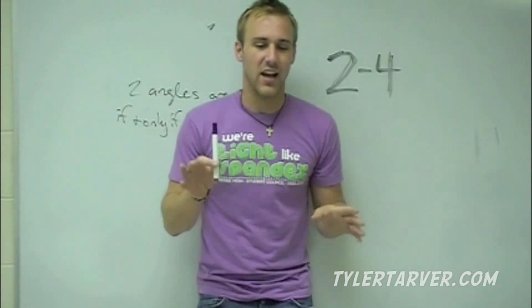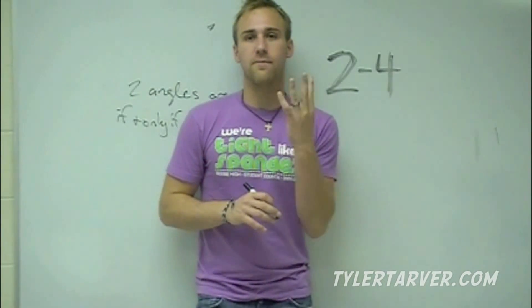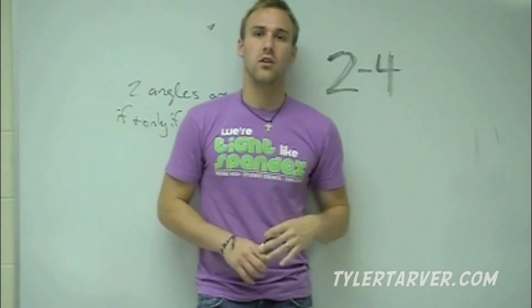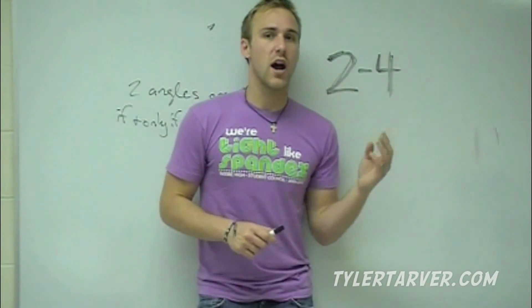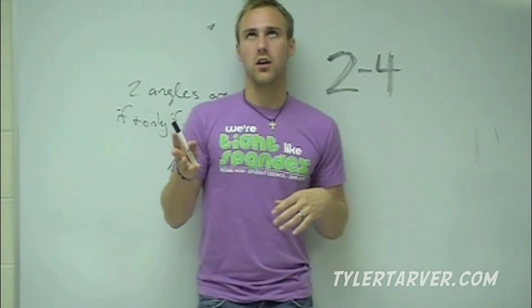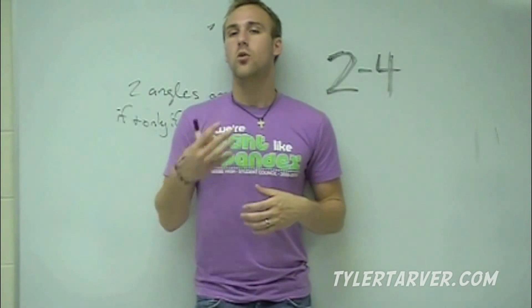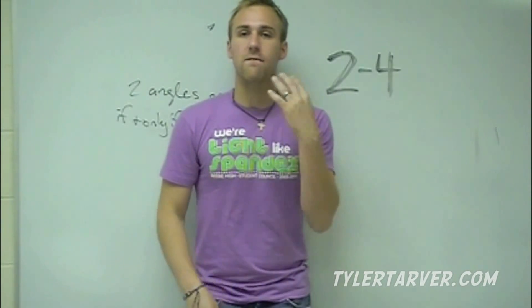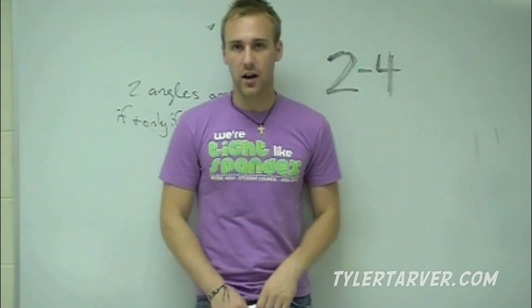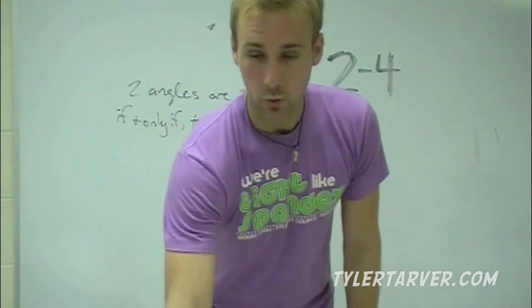A quadrilateral is a four-sided polygon. A triangle is a three-sided polygon. A quadrilateral is a four-sided polygon — never forget that.